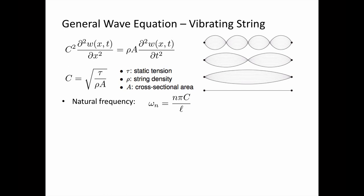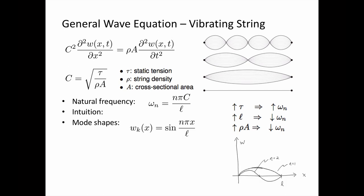Rho is the string density and A is the cross-sectional area. It's possible to show that the natural frequencies of the string are governed by this formula, and we can get some intuition for the behaviors of the string vibrating as different things change. For example, if we increase tension, that increases the natural frequency. If we increase length, that decreases natural frequency. And if we increase mass, that's going to decrease natural frequency.